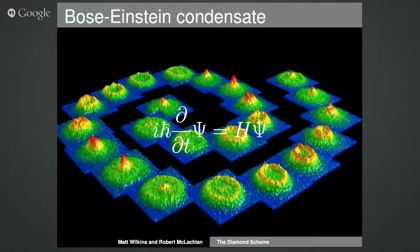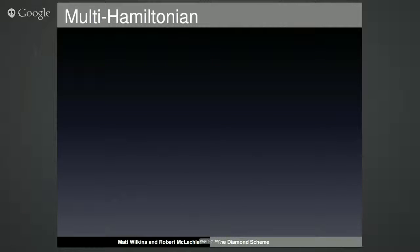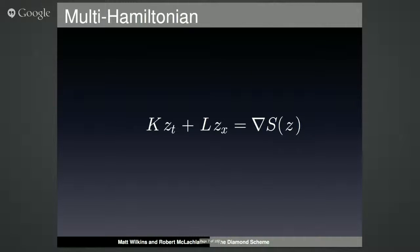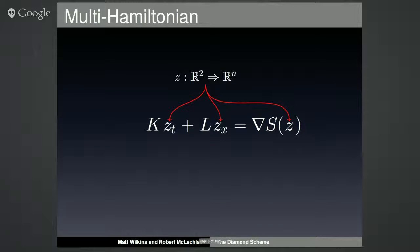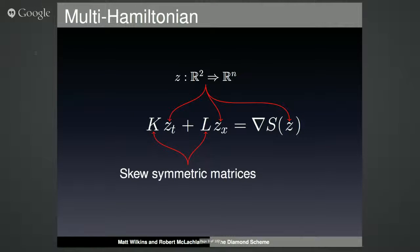Now what do those PDEs have in common? Well, they can both be written in this form: it looks a bit simpler — there's only first order time and first order space derivatives. The Z here is actually a vector, a function of time and space that maps to a vector in R^n, and K and L are matrices.